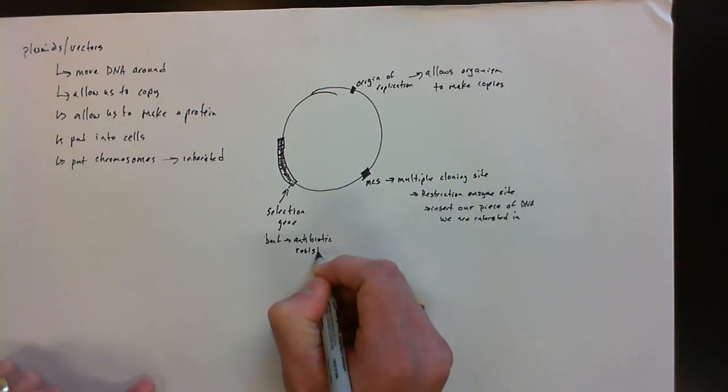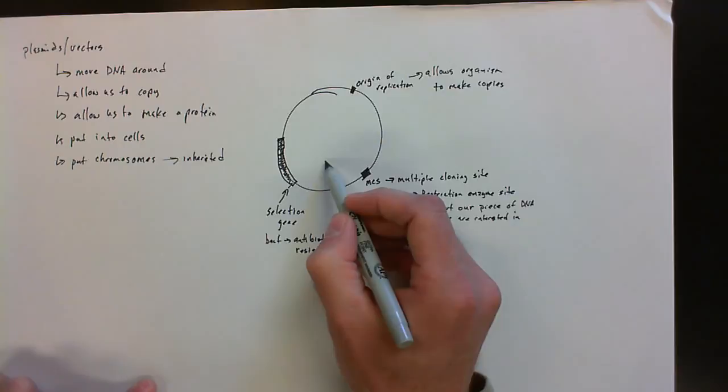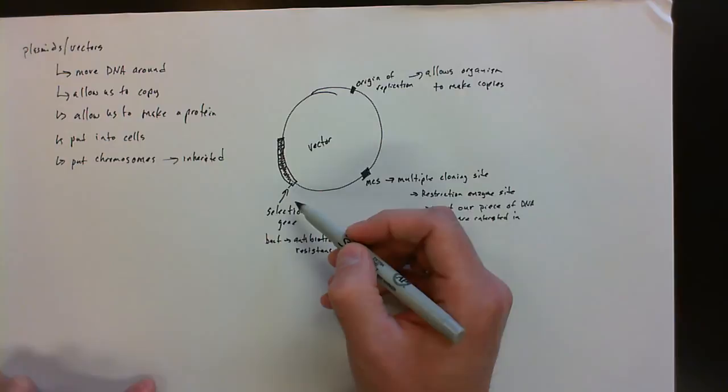So basically what we're saying is if the bacteria have this vector, have this plasmid, they will be able to grow in the presence of an antibiotic.